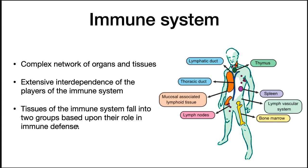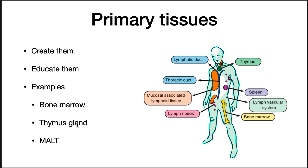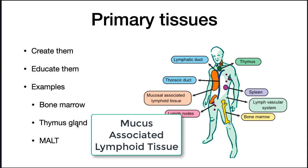The immune system itself is a complex network of organs and tissues, with extensive interdependence of the players in the system. They communicate with each other and work together to defend you against microorganisms. Tissues of the immune system fall into two groups based on their role. Primary tissues create and educate the cells of the immune system. Examples include the bone marrow, where all immune cells originate, the thymus gland, and the mucus-associated lymphoid tissue.